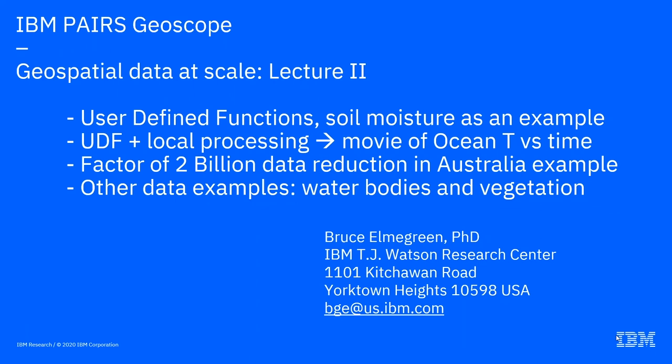I'll use soil moisture as an example. I showed you some images of soil moisture last time — some of those were from a user-defined function. I'll also show you how to use a user-defined function and retrieve data and then do some local processing. This will lead to a movie of ocean temperature over the Atlantic Ocean versus time. I'll show you an example with an enormous reduction of data, about several billion values, studying Australia fires to see if there's a correlation with temperature. And I'll show you other examples having to do with water detection or vegetation.